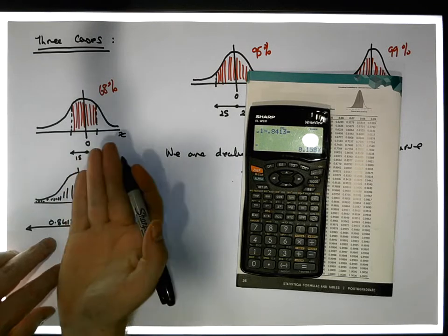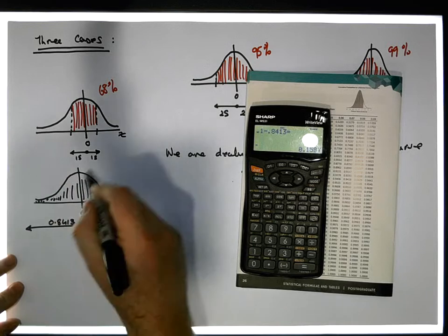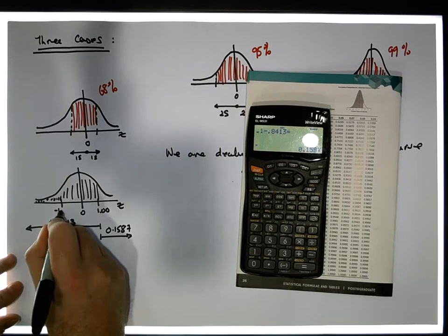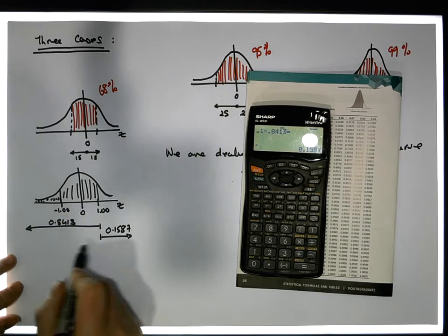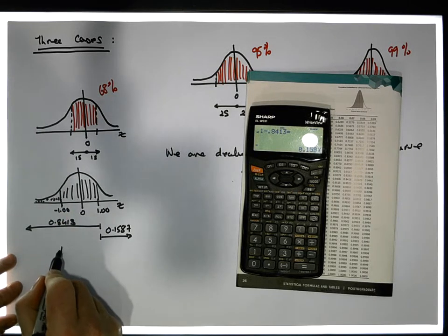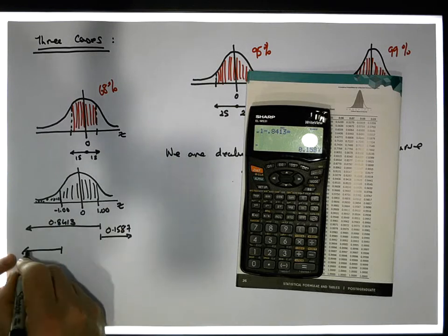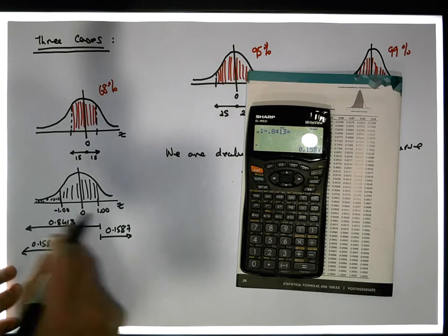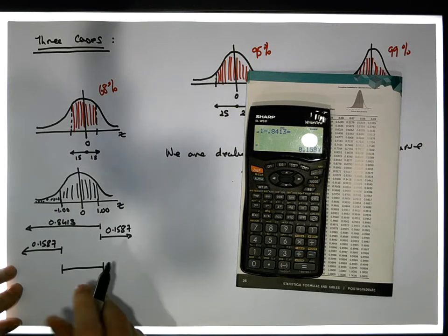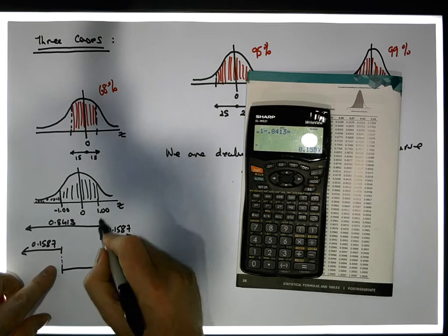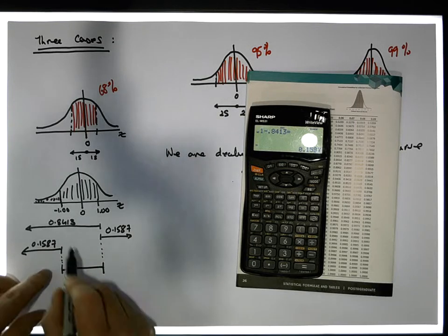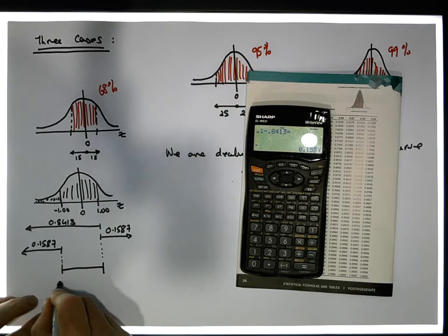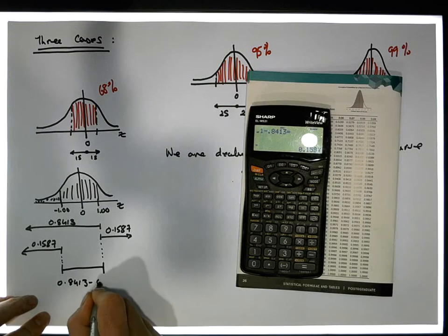Now, through symmetry — through the symmetric properties — one standard unit on the left side of the curve, that's minus 1.00, we should also have the same amount of area in that left tail as there is in the right tail. So there should be 0.1587 in that particular left tail, which means the area in between must be the area from the left of one minus the area in the left-hand tail: 0.8413 minus 0.1587.